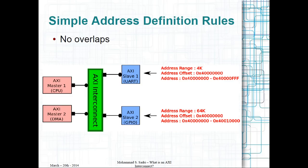There are a set of rules you should obey when using AXI interconnects. The most important one is that the addresses you define for your AXI slaves should not have any overlap. The address regions defined for any AXI slave should be completely separate and should not overlap with any other region. For example, if the address range of one AXI slave begins at a certain address and ends at a given number, the next slave cannot begin from the same address — it should begin from somewhere after that address.